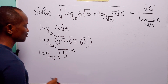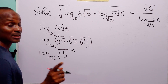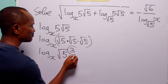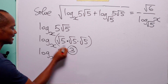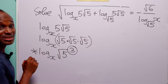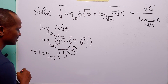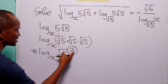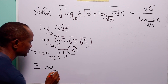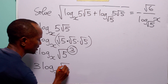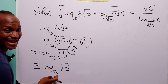The next thing we are going to do is apply the power rule of logarithms to this term. That is the rule that says we can bring the exponent of root 5 down to the front of this log term to become a multiplier. When we apply this rule, this term becomes 3 times log to base x of root 5.